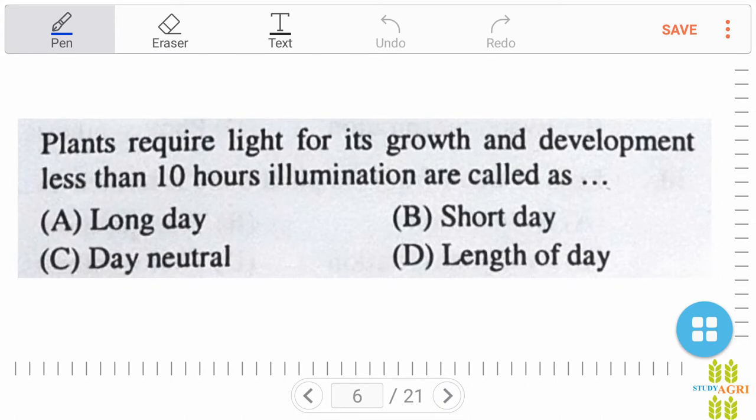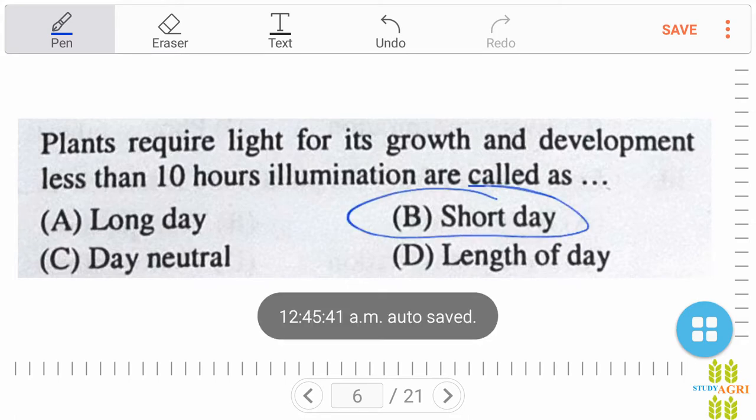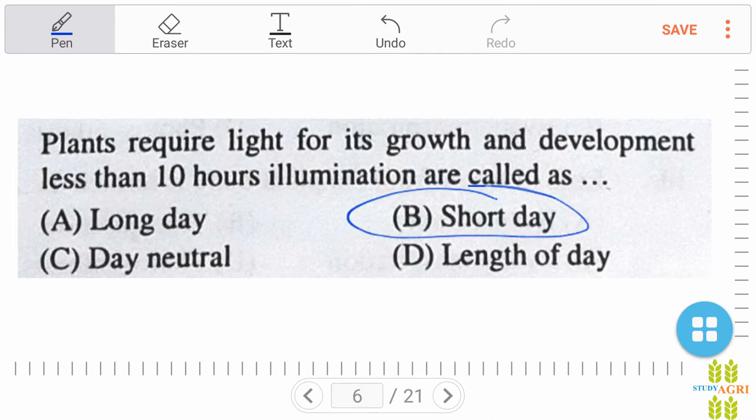Plants require light for their growth and development. Less than 10 hours illumination are called option B, the right answer, short day. If 12 hours then long day, and in case of 10 hours, right answer is short day.